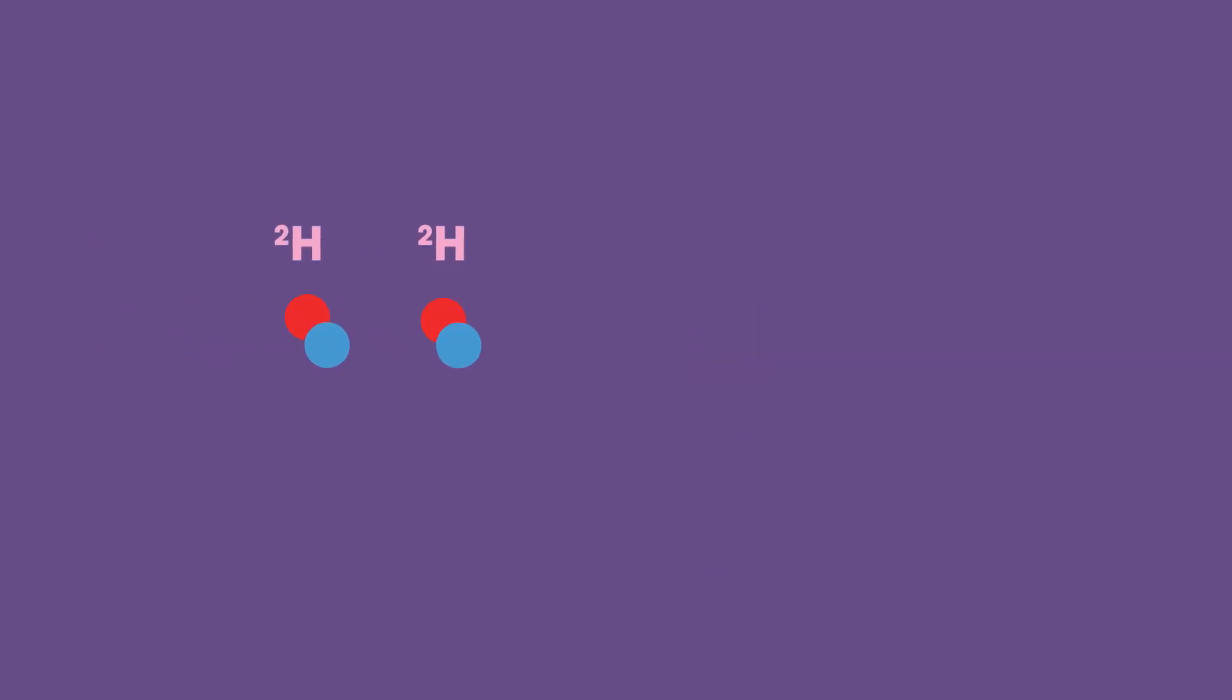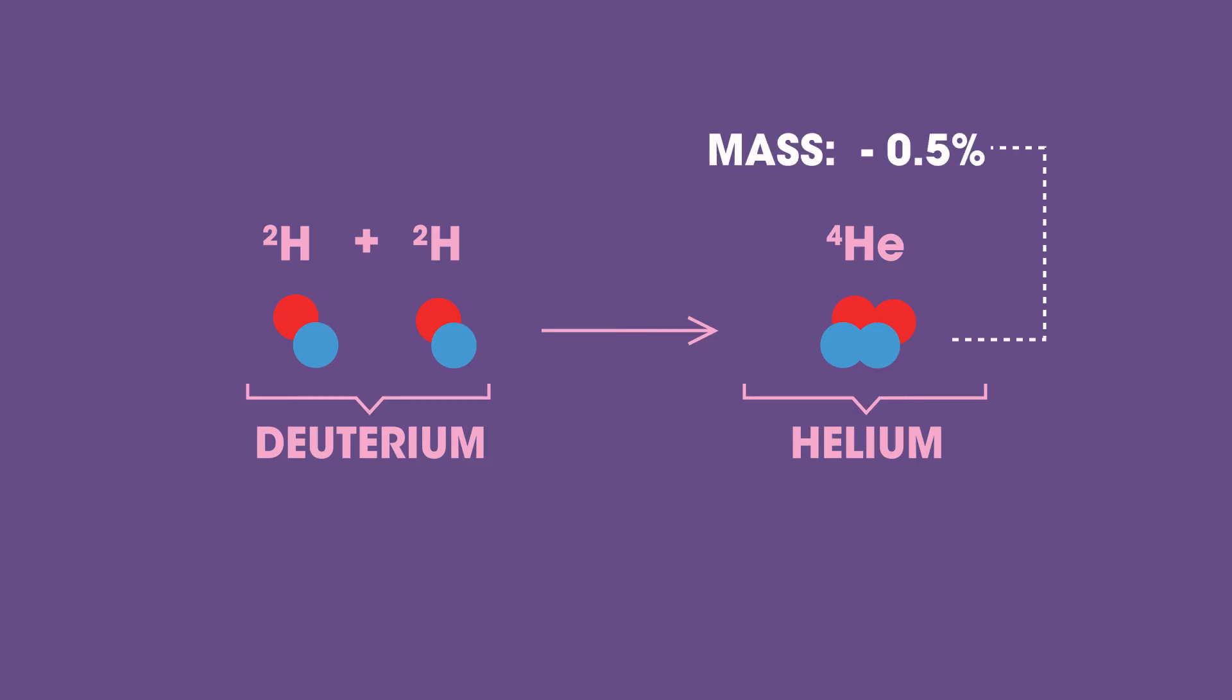Consider the simple example of fusing deuterium to make helium. When two deuterium nuclei fuse to make one helium nucleus, there is a small but measurable loss in mass, about 0.5%.